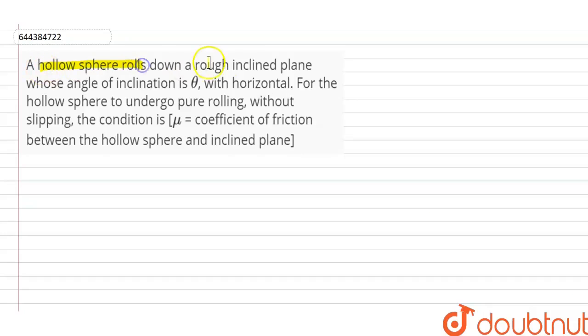A hollow sphere rolls down a rough inclined plane whose angle of inclination is theta with horizontal. For the hollow sphere to undergo pure rolling without slipping, the condition is mu equal to coefficient of friction between the hollow sphere and inclined plane. According to question,